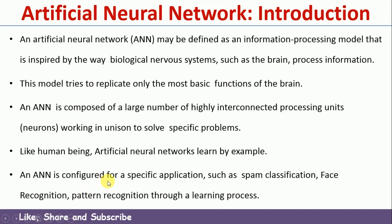An Artificial Neural Network is configured for a specific application or to solve a particular problem — such as spam classification, face recognition, pattern recognition, or similar applications. You cannot solve all problems using one Artificial Neural Network; a particular Artificial Neural Network can solve one problem at a time. The brain, however, works in such a way that it can solve every kind of problem.